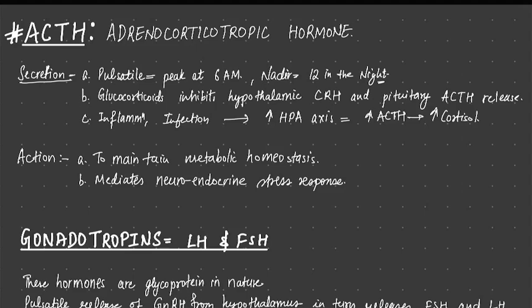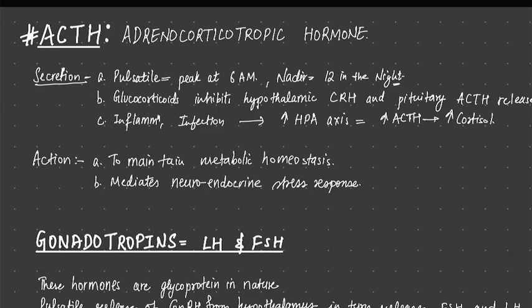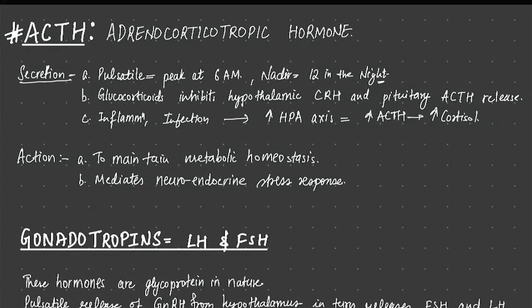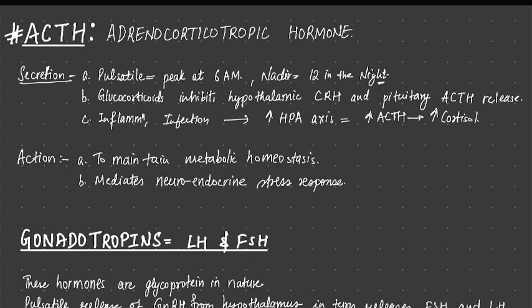Let us discuss a few things about ACTH, that is adrenocorticotrophic hormone. It is secreted by the anterior lobe of the pituitary gland in a pulsatile form. Like all other anterior pituitary hormones, it peaks at 6am in the morning, and its lowest level is seen at about midnight.